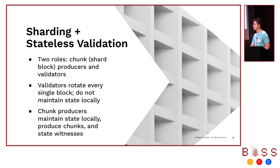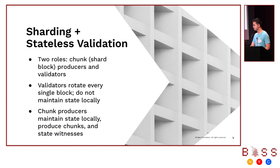I want to talk about the combination of sharding and stateless validation and how it can help build a very powerful Layer 1 blockchain. In this design, for each shard there are shard block producers — called chunk producers — and there are validators. Validators rotate to some shard on every block, based on a randomness beacon provided by the blockchain so that it's unbiasable. They don't need to store any state locally. Chunk producers store state locally only for the shard they're assigned to, produce chunks — which are shard blocks — and also produce the state witness needed to execute that chunk.